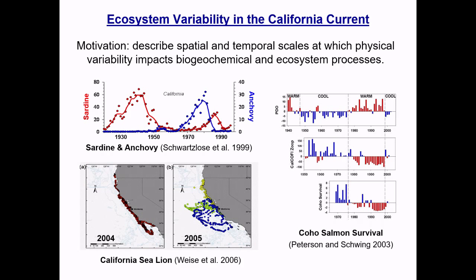The last example is the well-known connection between survival of coho salmon and abundance of zooplankton, and further the connection to the Pacific Decadal Oscillation. During a warm phase of the PDO, you have decreased zooplankton concentration, which leads to increased mortality or less survival of the coho salmon.